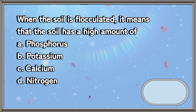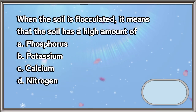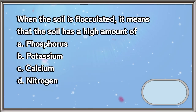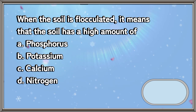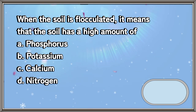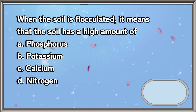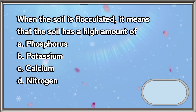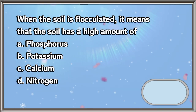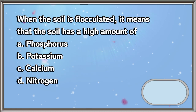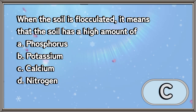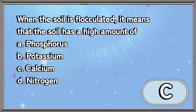When the soil is flocculated, it means that the soil has a high amount of: A. Phosphorus, B. Potassium, C. Calcium, D. Nitrogen. The answer is letter C.